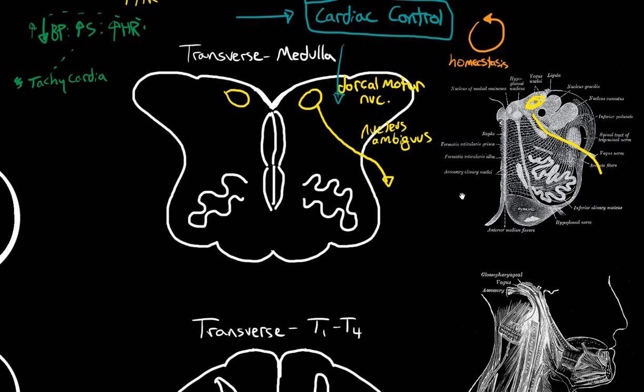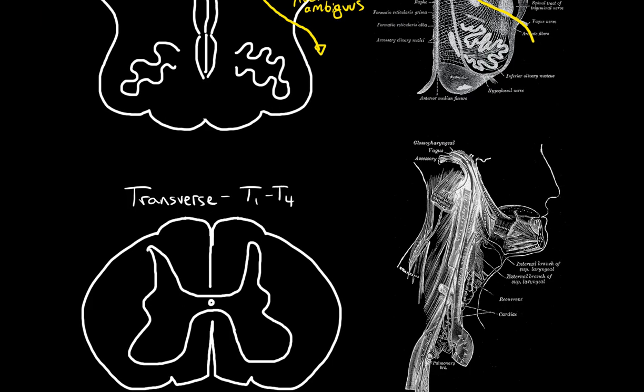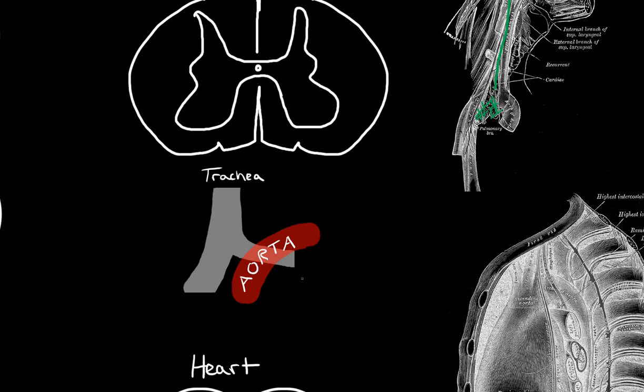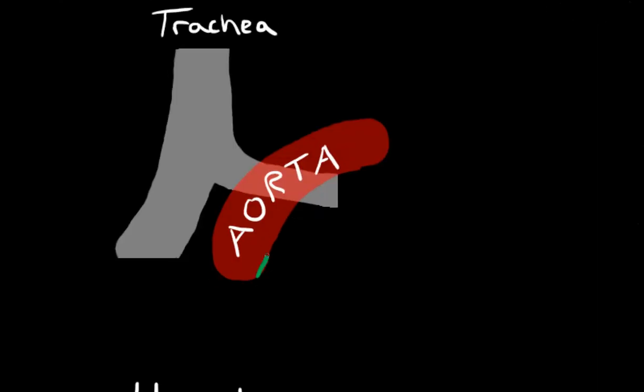So following cranial nerve 10 down, we can see it exiting from the brain stem, descending in the neck, before making its way over to these things called the cardiac plexuses. So here I have the arch of the aorta and the bifurcation of the trachea and that's where the cardiac plexuses lie. So we have two of them. Here's a superficial cardiac plexus and here's a deep cardiac plexus.